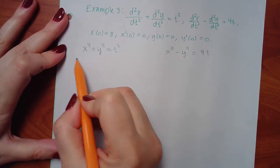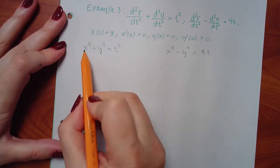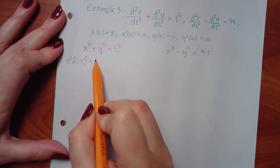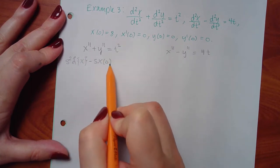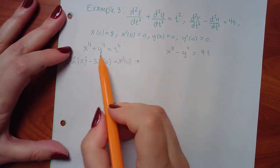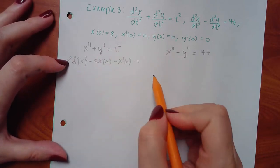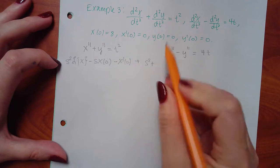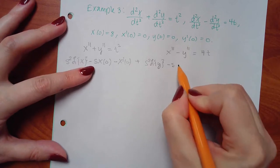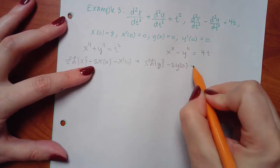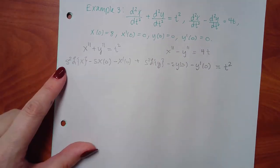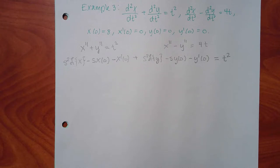I'm going to Laplace each term. When I Laplace x double prime, I get s squared times L{x} minus s times x(0) minus x'(0). For the y term it's very similar: s squared times L{y} minus s·y(0) minus y'(0), set equal to t squared. This is just the first equation.